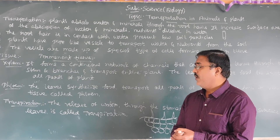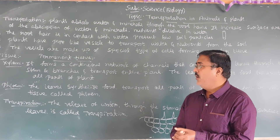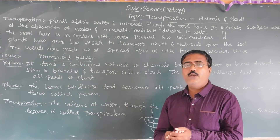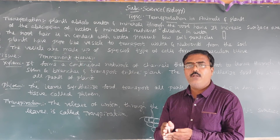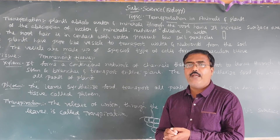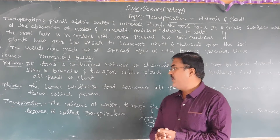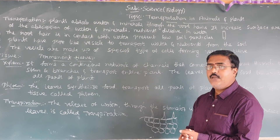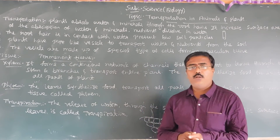Next is phloem. Like xylem, phloem is the food-conducting tissue. Whatever the plants prepare with the help of sunlight, water, carbon dioxide, and other minerals through photosynthesis, it is stored in the form of food — glucose. That food is transferred to all parts of the plant body. This is done by the phloem tissue. Generally, leaves synthesize food and transfer it to all parts of the plant — this is done by the phloem.